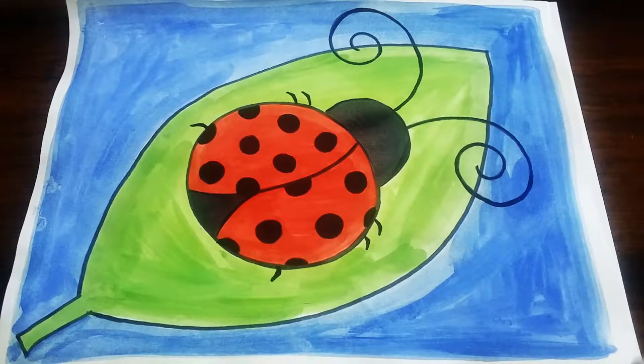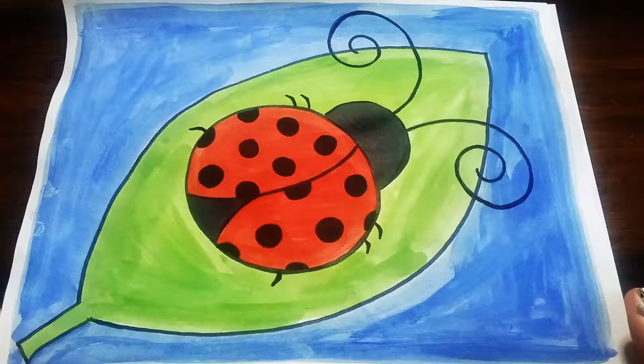Hey boys and girls! Today you're going to be making this ladybug on a leaf. So to get started you're gonna get a sheet of white construction paper and I want you to hold it landscape style so that it's wider side to side than it is up and down.